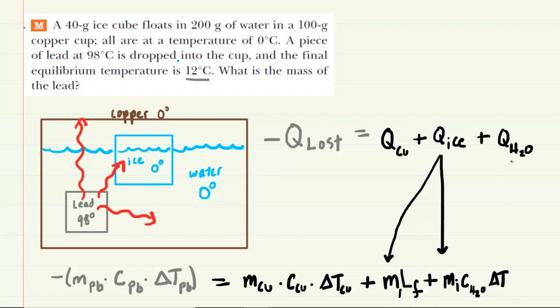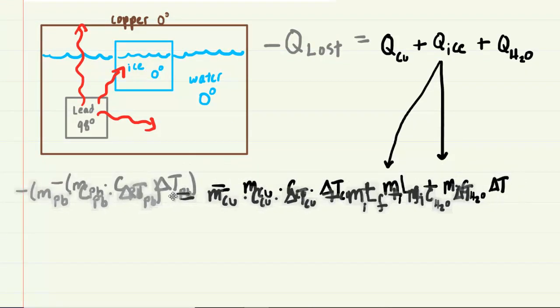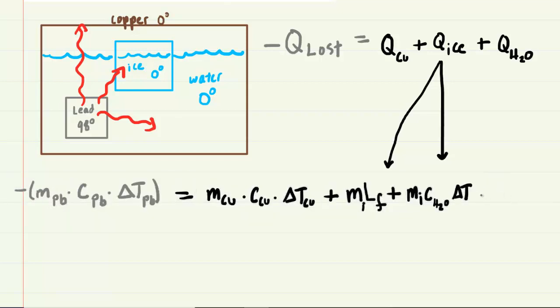Finally, you have the change in temperature of the water, which is going to go from 0 up to 12. So we'll use another MC delta T term. We're going to need even more room here. So let's slide this over. And finally, for the water, we'll have its mass times the specific heat times the delta T. So all of those values will be for the water.